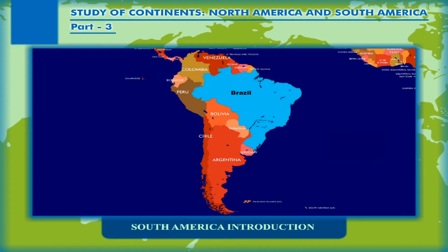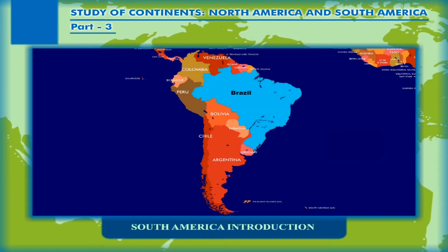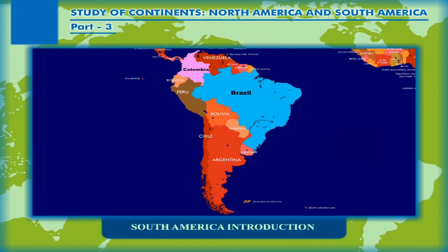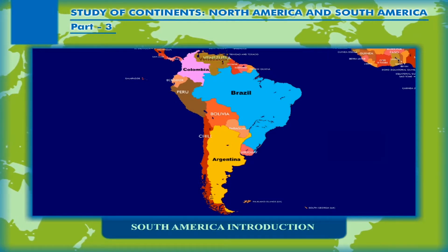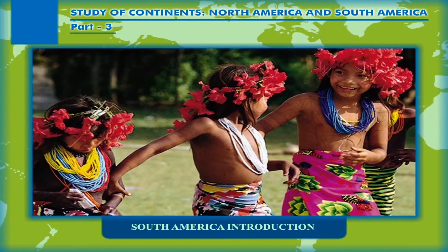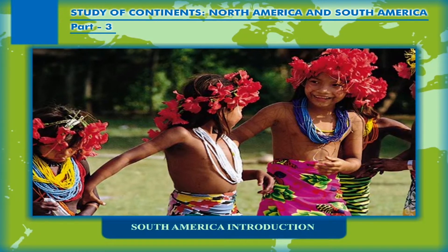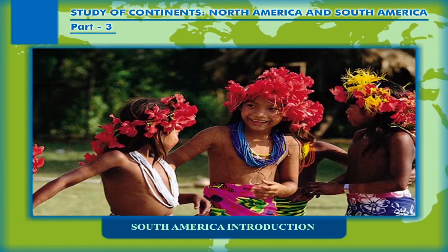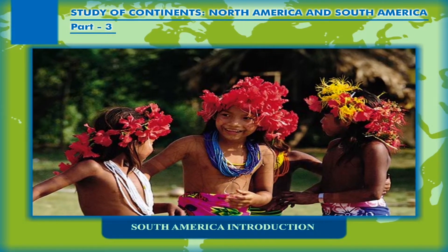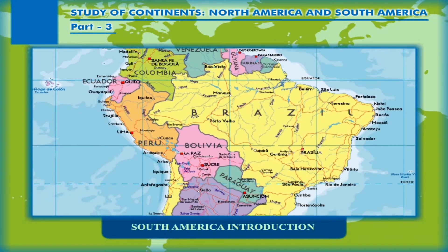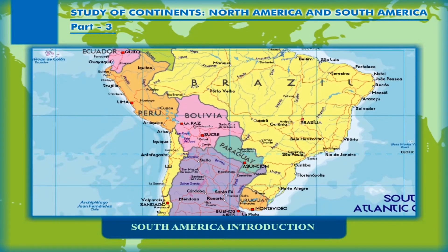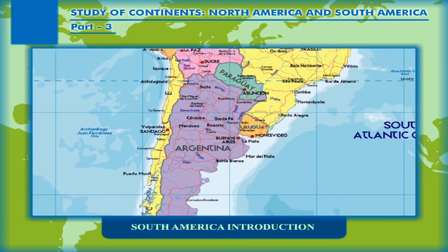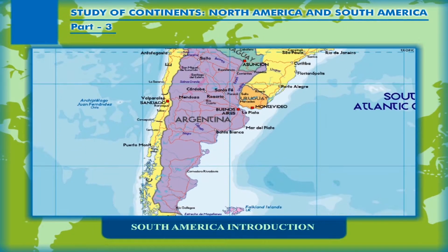Brazil is by far the most populous South American country with more than half of the continent's population, followed by Colombia, Argentina, Venezuela, and Peru. The continent's cultural and ethnic outlook has its origin in the interaction of indigenous people with European conquerors and immigrants. Given a long history of colonialism, the overwhelming majority of South Americans speak Portuguese or Spanish, and societies and states commonly reflect Western traditions.